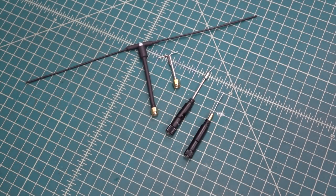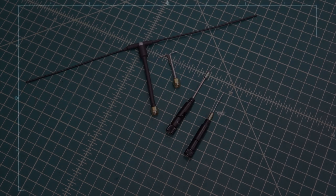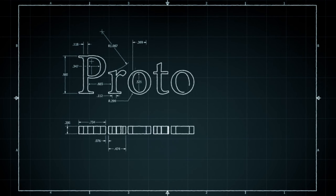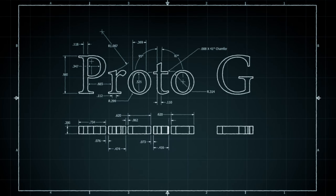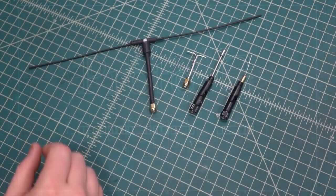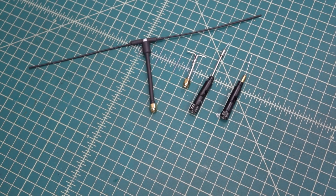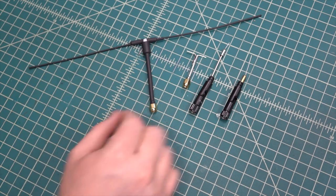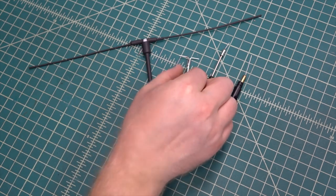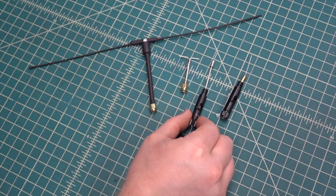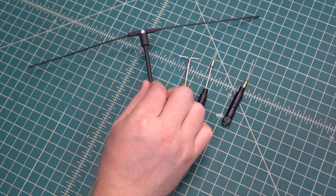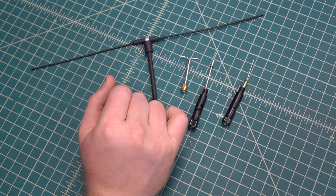In this video we'll go over dipole antennas. All these antennas here are dipole antennas. Now this is a 5.8 GHz antenna. This is a 5.8 GHz antenna. This is a 2.4 GHz antenna. And this is a 433 MHz antenna.